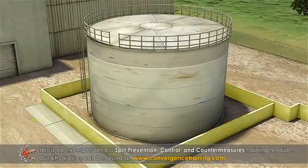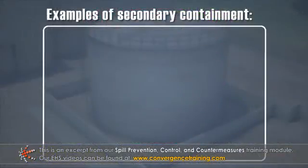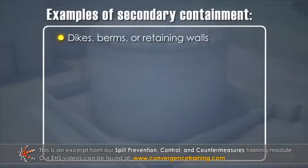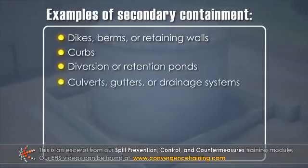Secondary containment is a barrier between a potential oil hazard and the environment. Examples of secondary containment structures include dikes, berms, or retaining walls, curbs, diversion or retention ponds, culverts, gutters, or drainage systems.